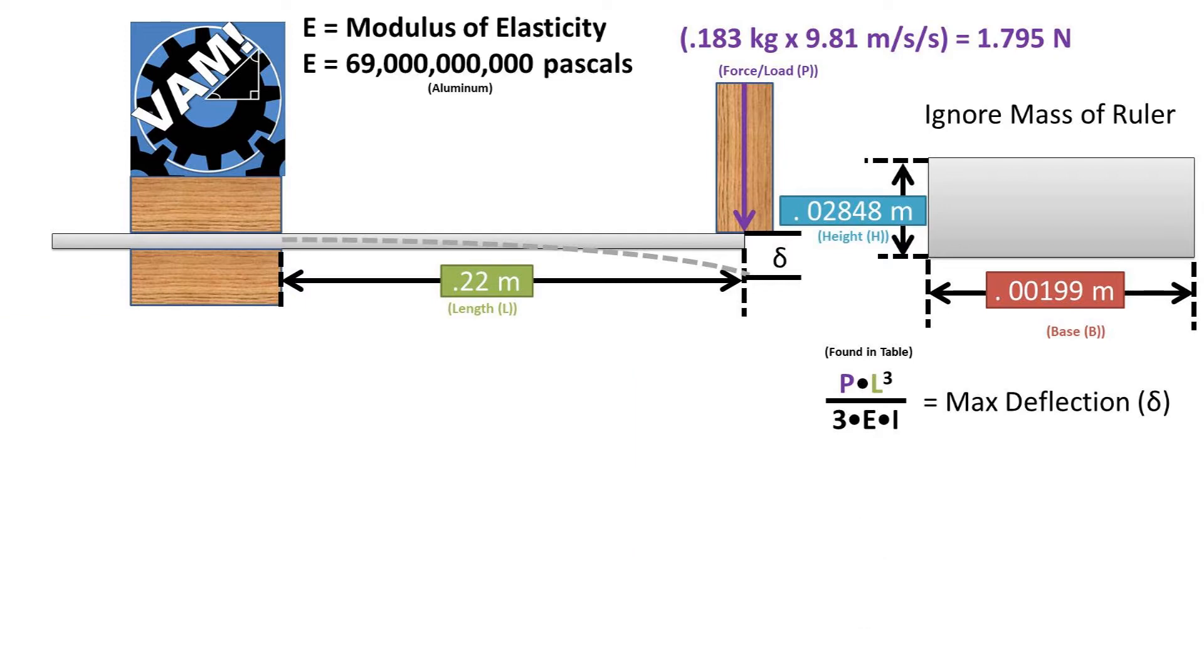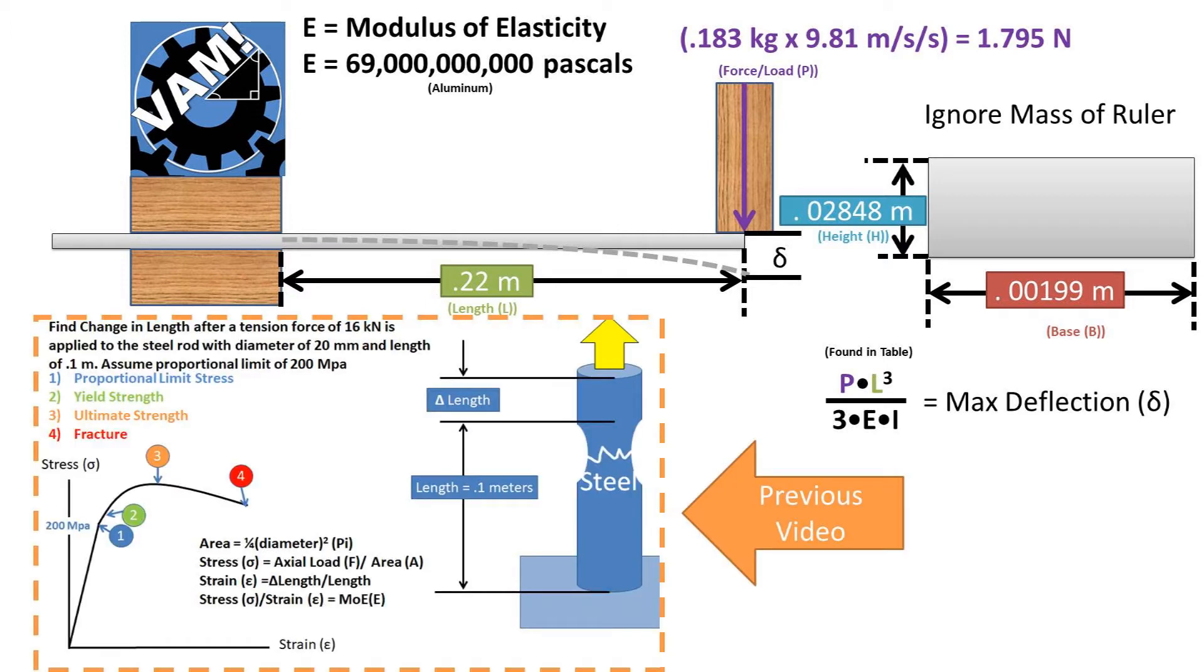So let's first find the modulus of elasticity. This can be found by a table or internet search. We get a modulus of elasticity of aluminum of 69 gigapascals. Recall from a previous video that the modulus of elasticity is the stress over the strain of a material.